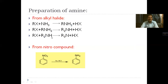When secondary amine reacts with another Alkyl Halide, the remaining hydrogen and halogen are released, and finally tertiary amine is produced. In a continuous reaction: primary amine is produced first, then secondary amine, then tertiary amine — all from the alkyl halide reaction.